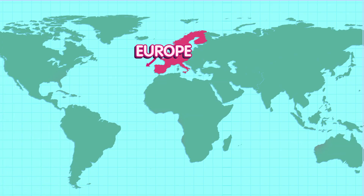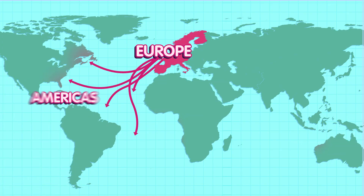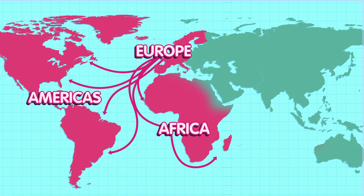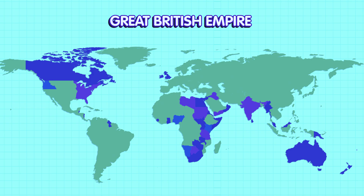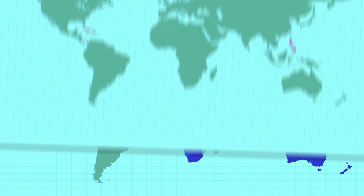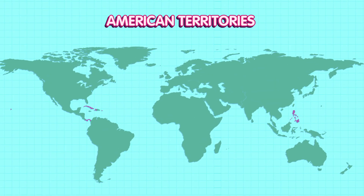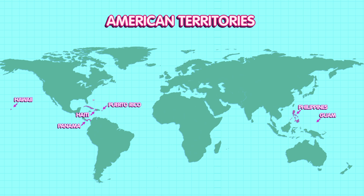Starting in the 1500s, European explorers spread throughout the Americas, Africa, and Asia, claiming lands for Europe. At one point, Great Britain's empire covered about one-fourth of the world. The United States, which began as colonies themselves, soon sprawled out through North America and took control of Haiti, Puerto Rico, Guam, the Philippines, the Hawaiian Islands, and parts of Panama and Cuba.